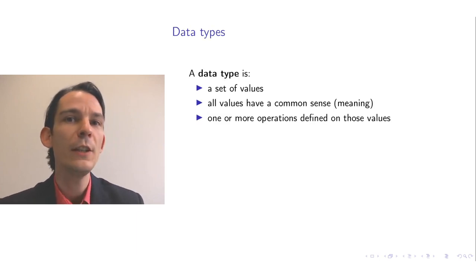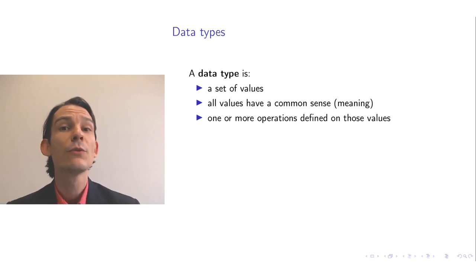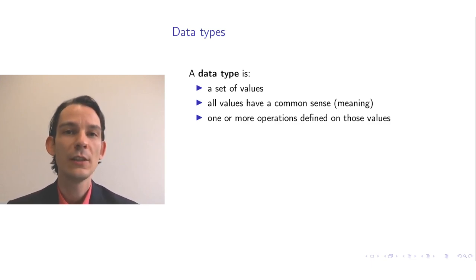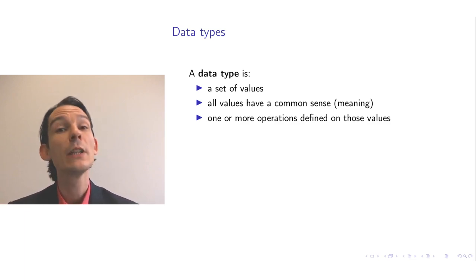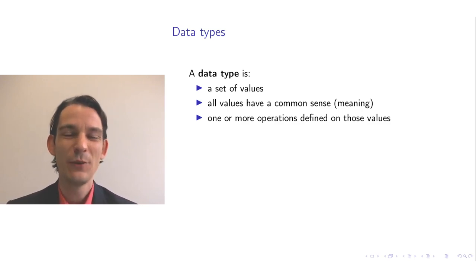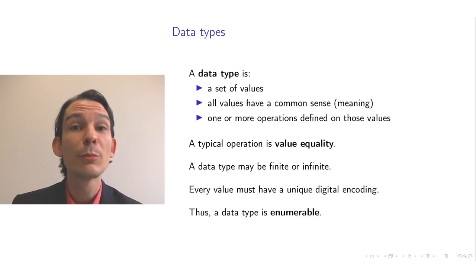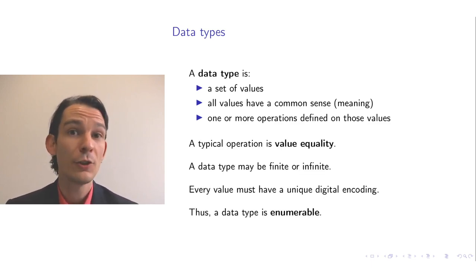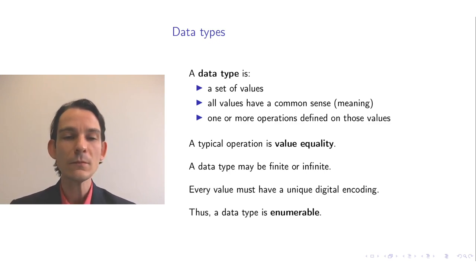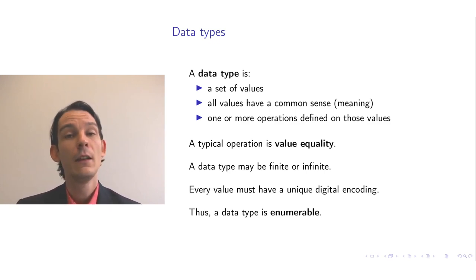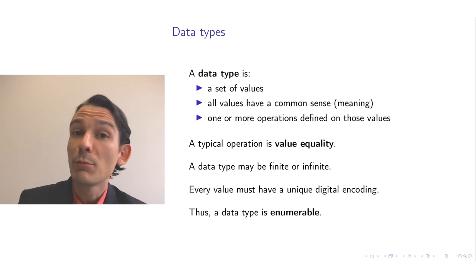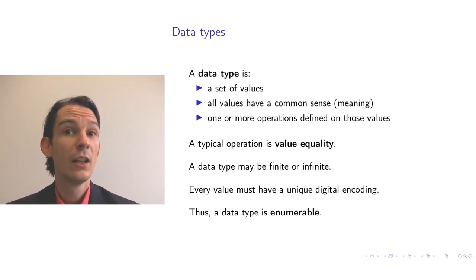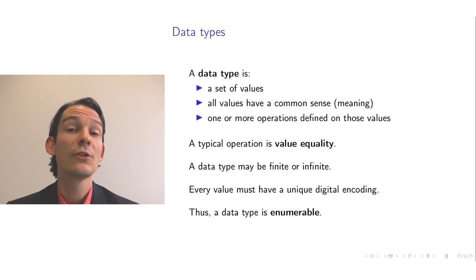Recall from a previous video that a data type is a set of values, and all the values in this set have a common intended meaning. We can also define operations on these values. A typical example operation would be value equality — two values are only equal if they are the same. A data type could be finite or infinite. An example of a finite data type would be the booleans true and false, and an example of an infinite data type would be the natural numbers.